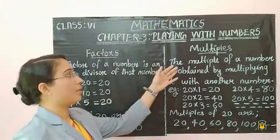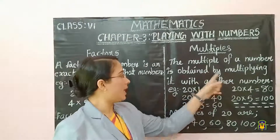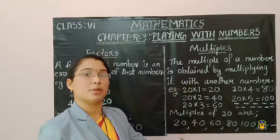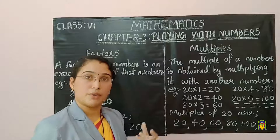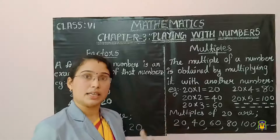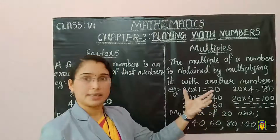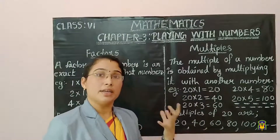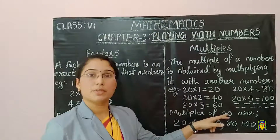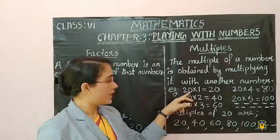Next we can study about multiples. The multiple of a number is obtained by multiplying it with another number. To find multiples, take that number and multiply it with the counting numbers — 1, 2, 3, etc. All the counting numbers can be used for multiplying the given number. Here the given number is 20, and we want to find out the multiples of 20. We can start with 1: 20 into 1.